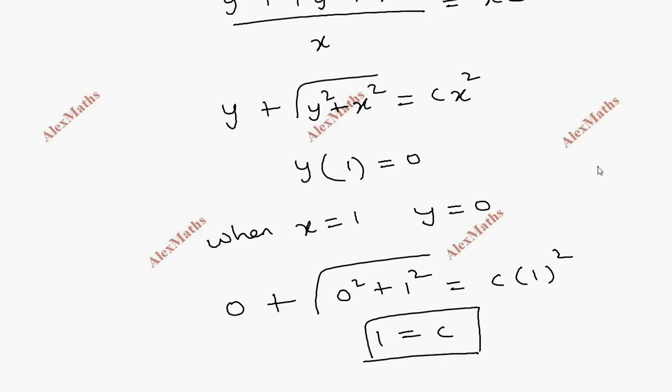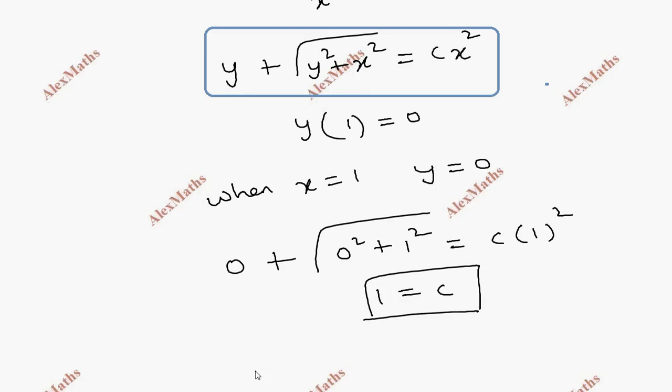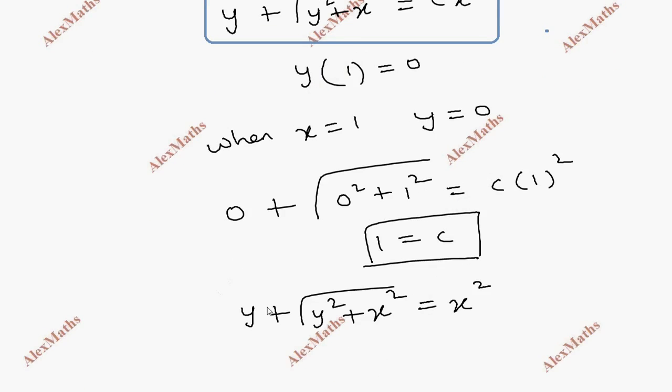Replace, so the final solution: y plus root of y squared plus x squared equals x squared. This is our final solution.